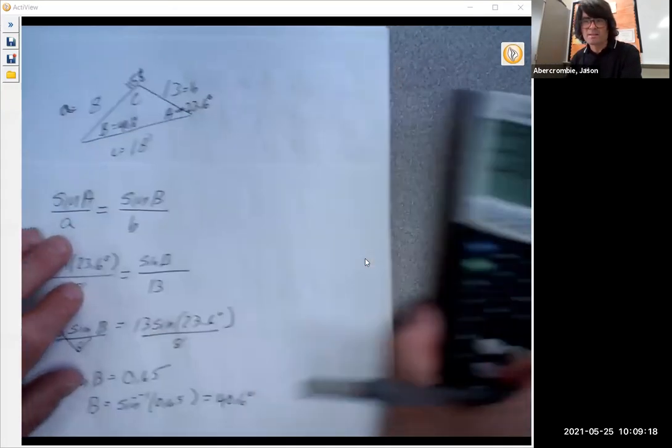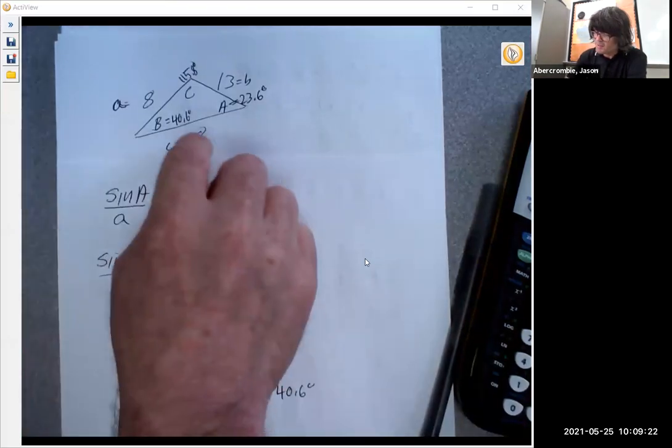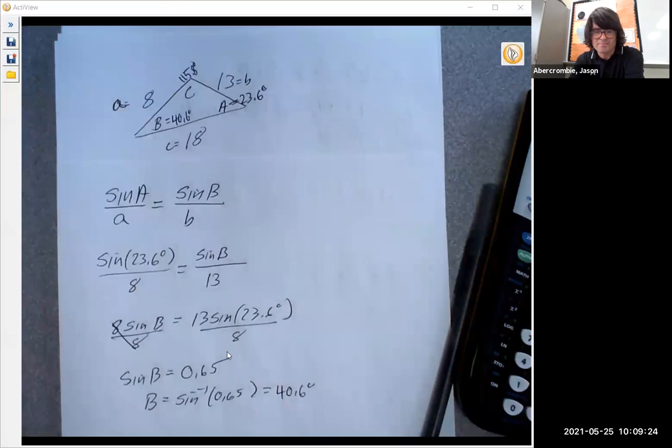So there you go. That's the law of cosines with a triangle with just three sides given. Bye-bye.